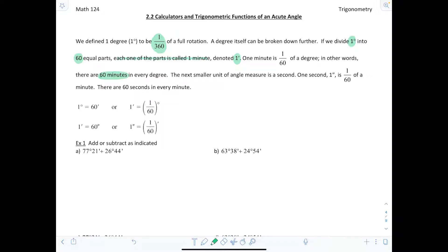The next smaller unit of angle measure is a second. One second, indicated with two tick marks, is 1/60th of a minute and there's 60 seconds in every minute. The vocab we're using is consistent with base 60 measurement system, which is what we use when we measure time as well.